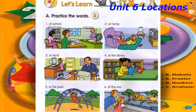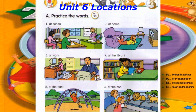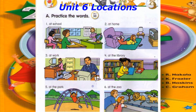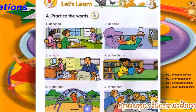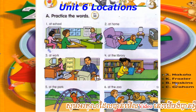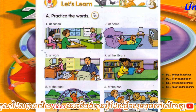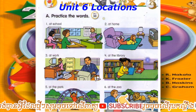Track 30. Let's learn. A. Practice the words. Number 1: At school. Number 2: At home. Number 3: At work. Number 4: At the library. Number 5: At the park. Number 6: At the zoo.